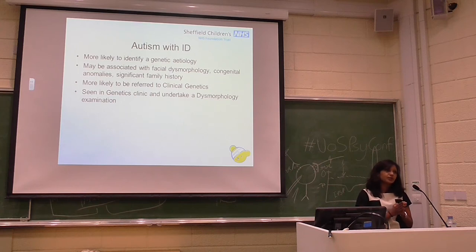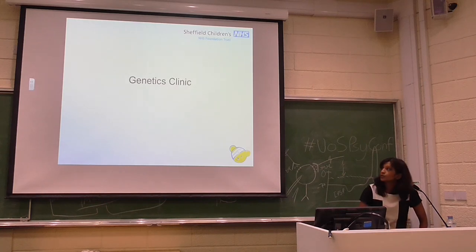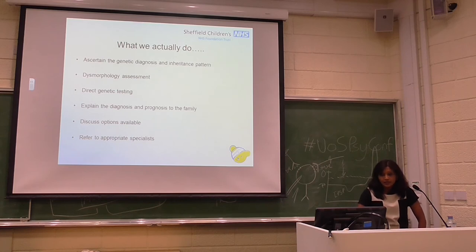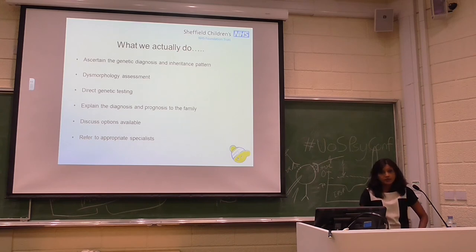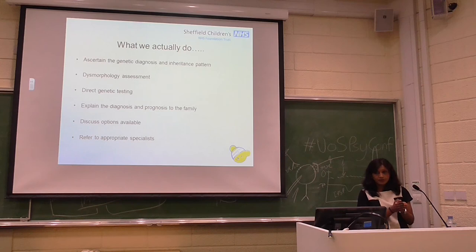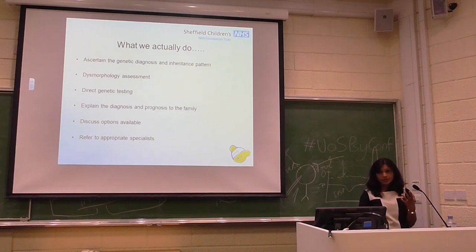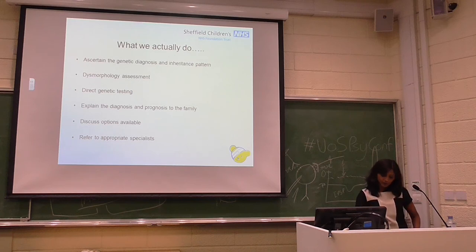Autism presenting with intellectual disability is more likely to yield a unifying genetic diagnosis, because it's often associated with facial dysmorphology, congenital anomalies, a contributory significant family history, etc. These are the families that tend to get referred to clinical genetics more promptly. What we do is see them in the clinical genetics clinic and undertake a dysmorphology examination. When we make a diagnosis, we try to explain the diagnosis, provide prognostic information to the family, put them in contact with patient support groups, discuss various options including options during pregnancy, and refer to appropriate specialists.